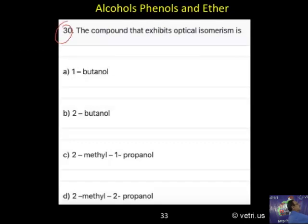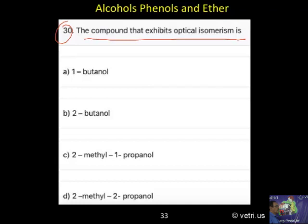Question 13. The compound that exhibits optical isomerism is: 1-butanol, 2-butanol, 2-methyl-1-propanol, 2-methyl-2-propanol. The answer is 2-butanol, which is optically active and shows optical isomerism.